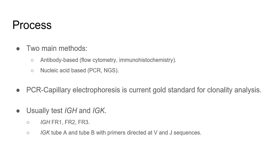PCR primers are designed towards specific regions of the Ig-heavy and Ig-kappa genes. For Ig-heavy gene, these include various VH families within frameworks 1, 2, and 3, and a consensus primer for the JH segment. For Ig-kappa light chain, tube A includes primers to V-kappa and J-kappa, while tube B includes V-kappa, J-c-kappa, and the deletion element Ig-kde. Ig-lambda is not usually tested, as over 95% of clonal rearrangements can be picked up from Ig-H and Ig-kappa.